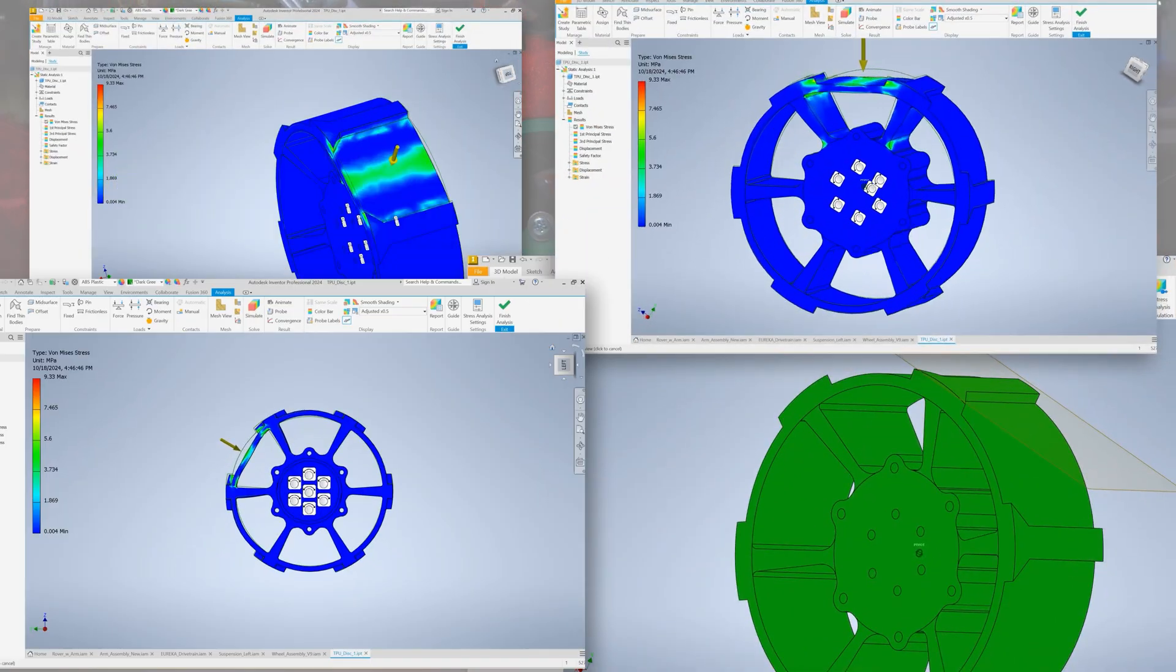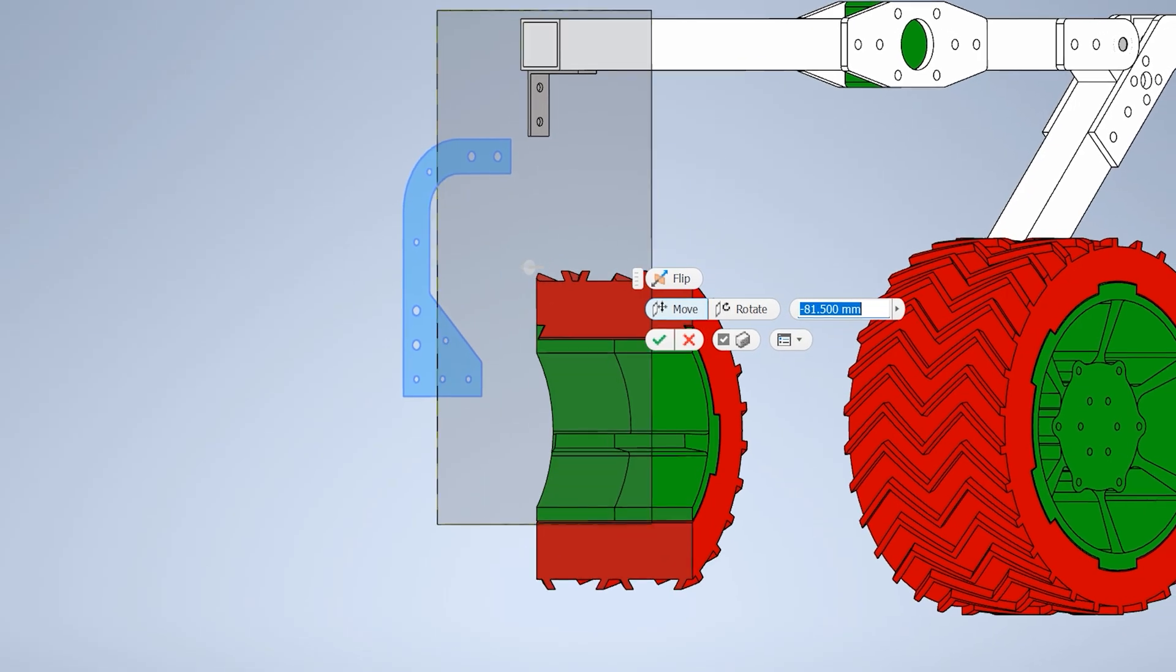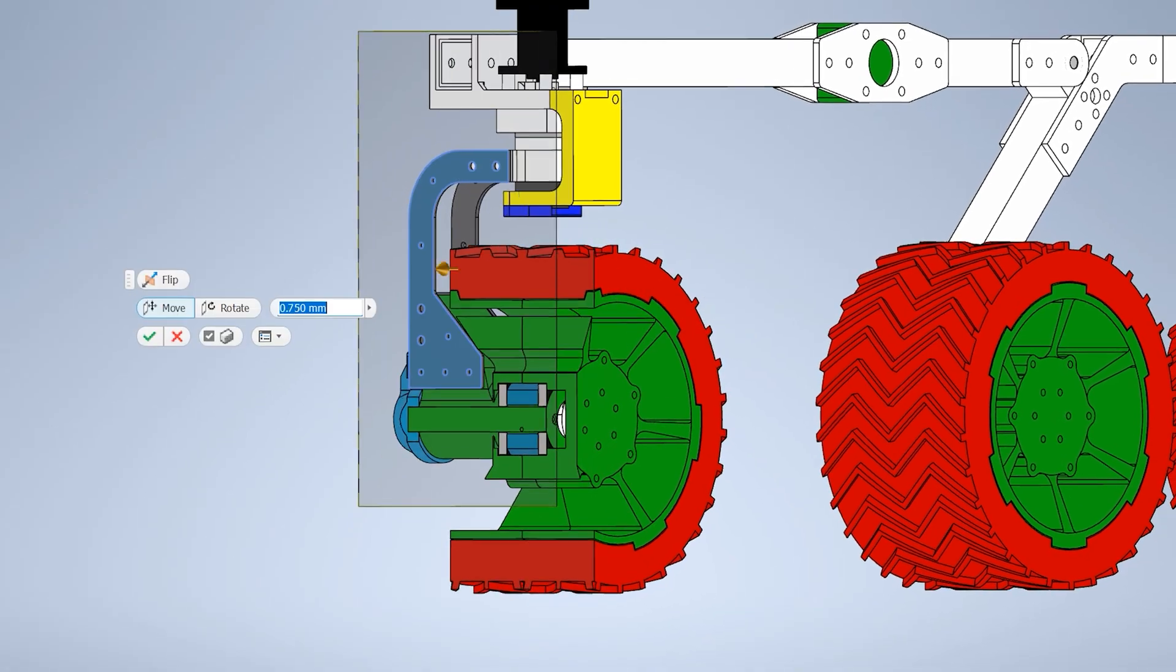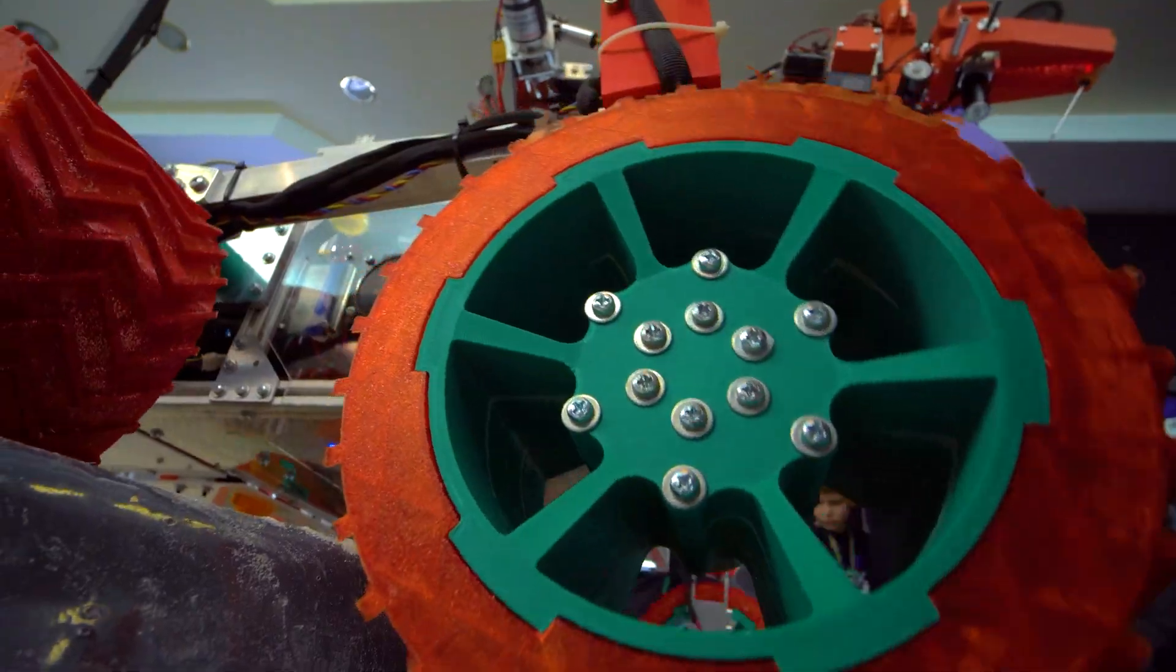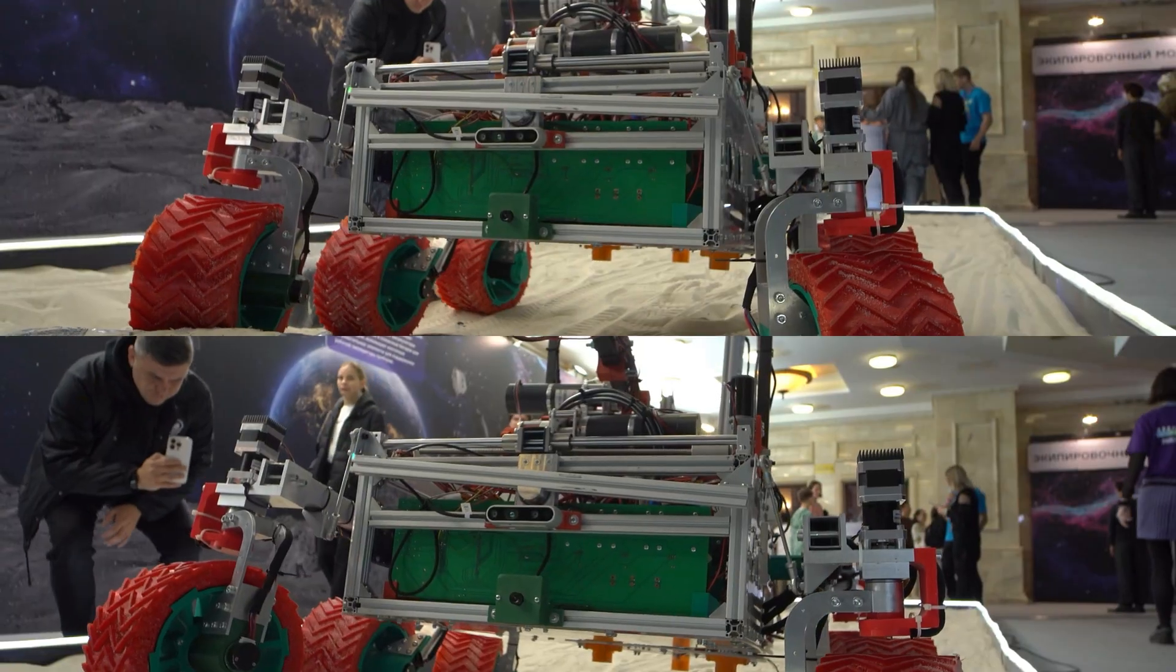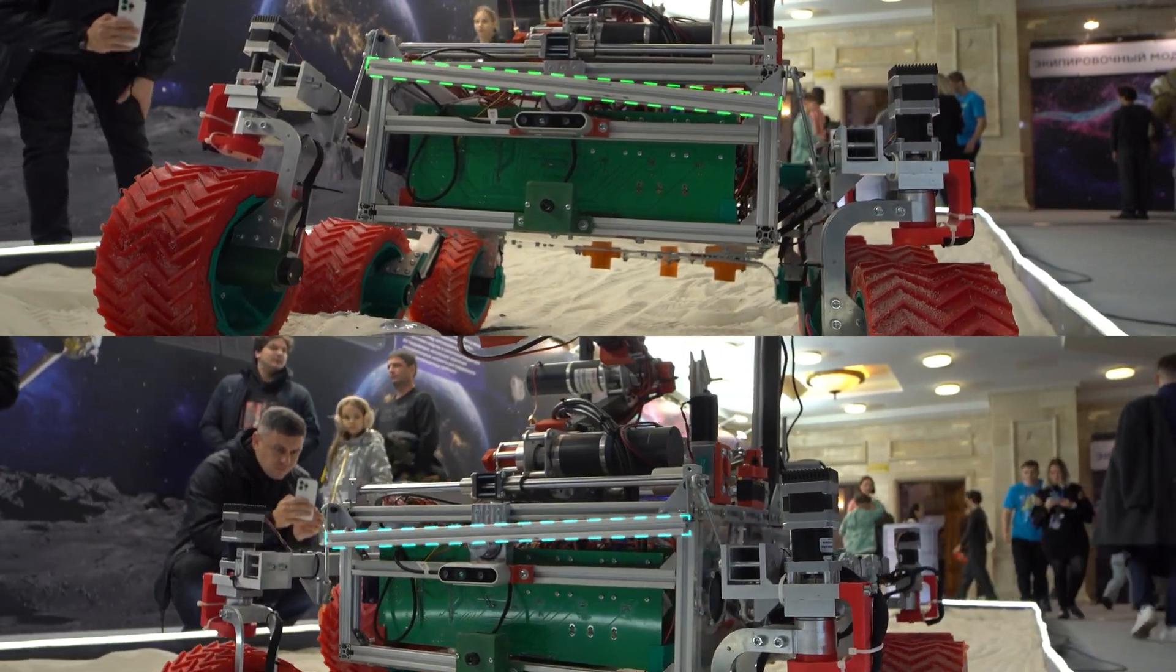We performed finite element analysis on many disc designs to save as much weight as possible. Our old full-floating wheel hub has not changed, though lighter bearings were installed. To reduce power consumption, steering steppers receive larger gearboxes. Front mount differential also received small upgrades, increasing stability and suspension travel.